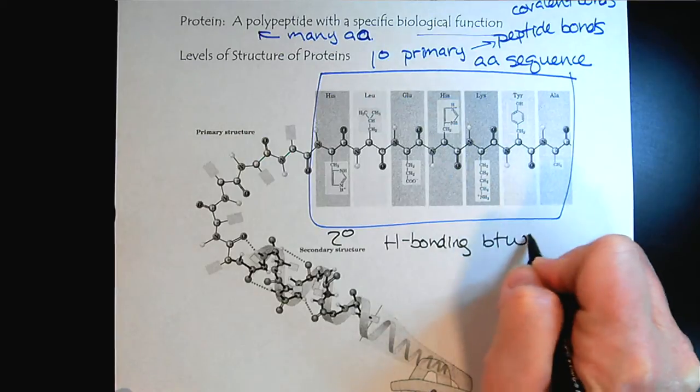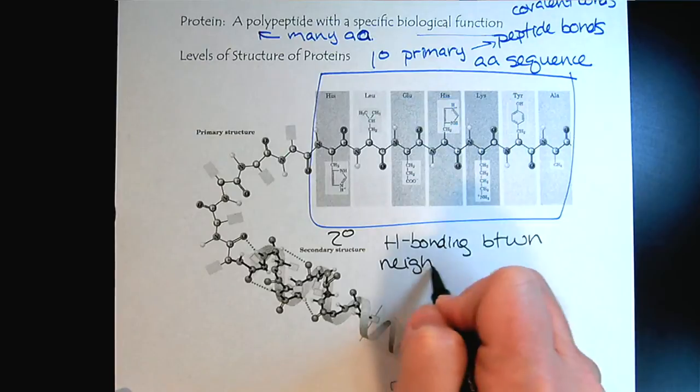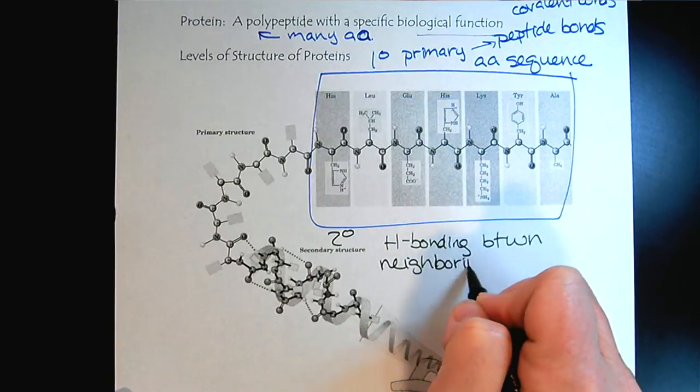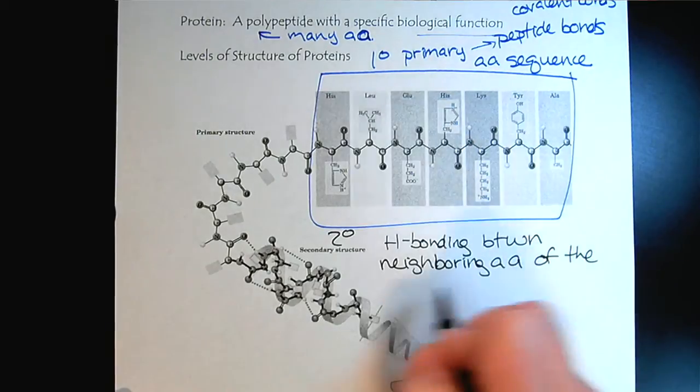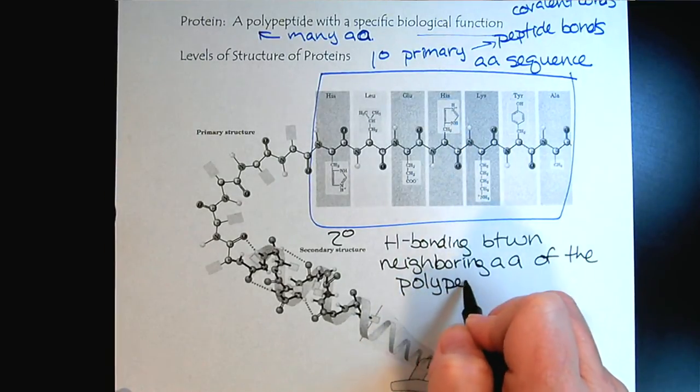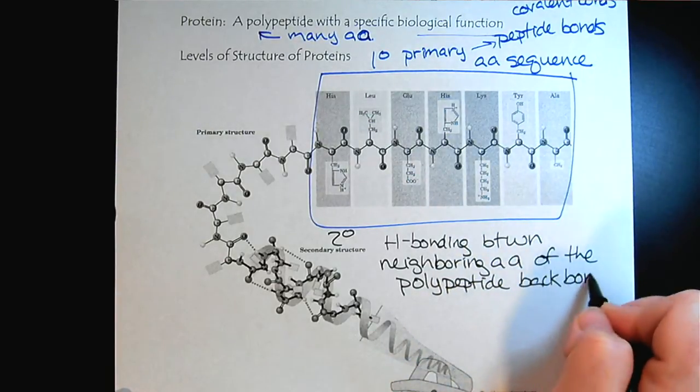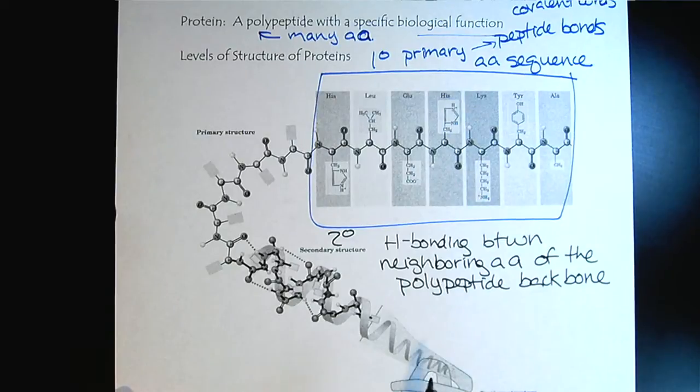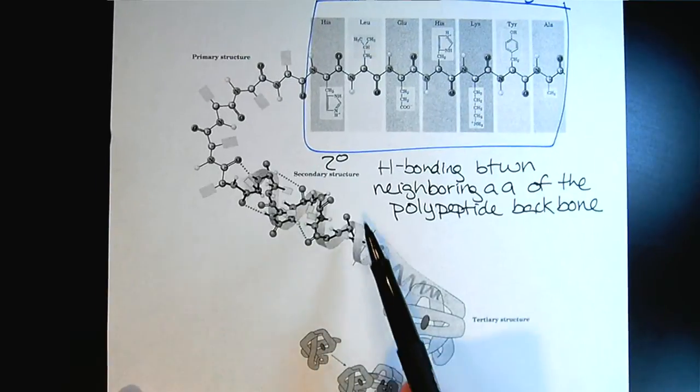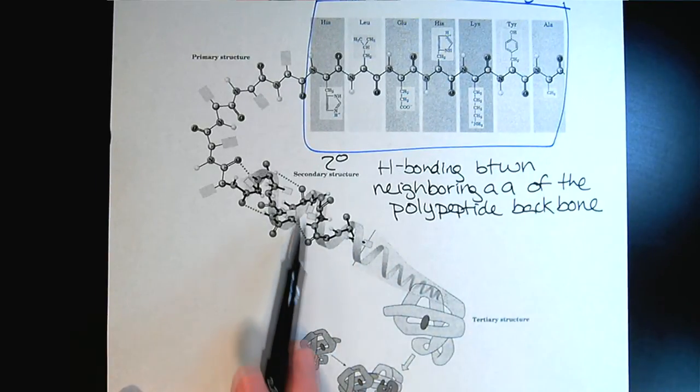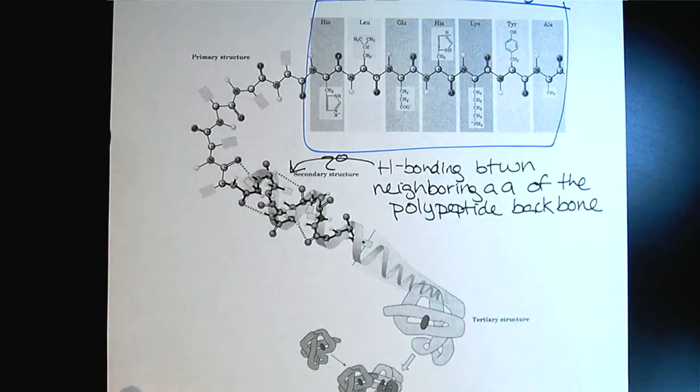That's a mouthful, right? We get H-bonding between neighboring amino acids. We will learn more about this in a future tutorial. One example is shown here, the spiraling of an alpha helix. Notice the interactions are happening here.